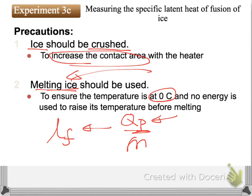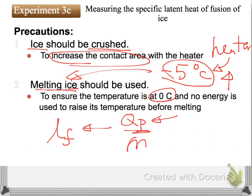Consider if the ice is not at 0 degrees Celsius — for example, if we use minus 5 degrees Celsius ice with the same setup. The heater gives out energy that does not only melt the ice but also needs to raise its temperature before melting begins, which becomes an error. Think about: if we really use minus 5 degrees Celsius ice, will the experimental value be greater or lower than the standard value?